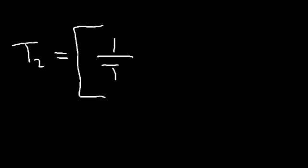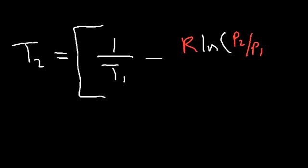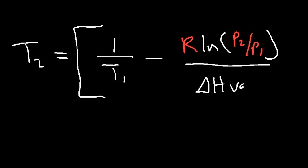If you need to find the second temperature at a different vapor pressure, use this equation: T2 equals 1 divided by T1 minus R times ln(P2/P1) divided by the enthalpy of vaporization in joules per mole, all raised to the negative one power. That gives you the Kelvin temperature T2. Those are the three most important forms of this equation.